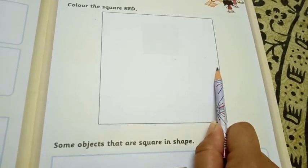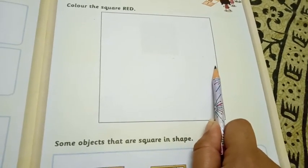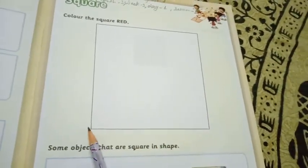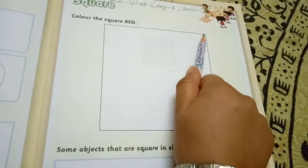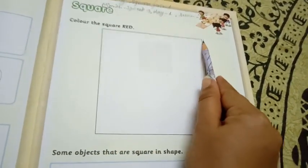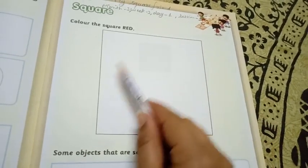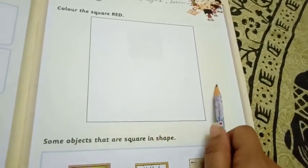Now how many corners are there? One, two, three, four. So yeh kya hai children? Corners. Aur yeh kya hai? Sides. Okay.